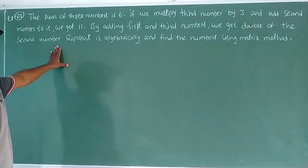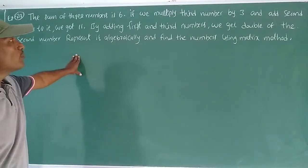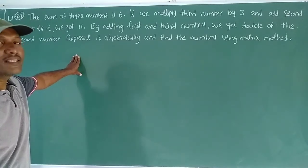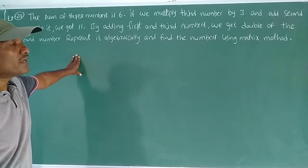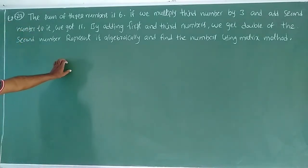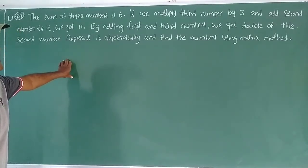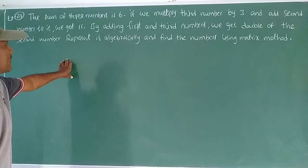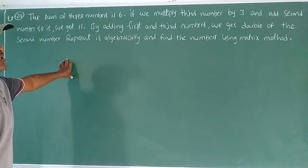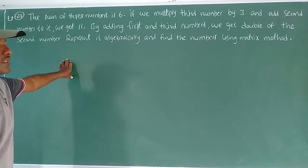The sum of three numbers is 6. If we multiply the third number by 3 and add the second number to it, we get 11. By adding the first and third numbers, we get double of the second number. Represent algebraically and find the numbers using matrix method.